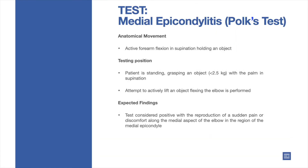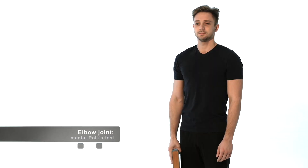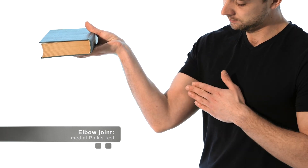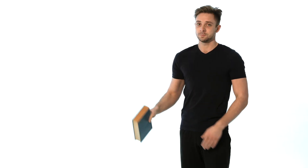Medial epicondylitis pokes test: active forearm flexion in supination holding an object. Patient is standing, grasping an object with the palm in supination. An attempt to actively lift an object by flexing the elbow is performed. The test is considered positive with the reproduction of sudden pain or discomfort along the medial aspect of the elbow in the region of the medial epicondyle.